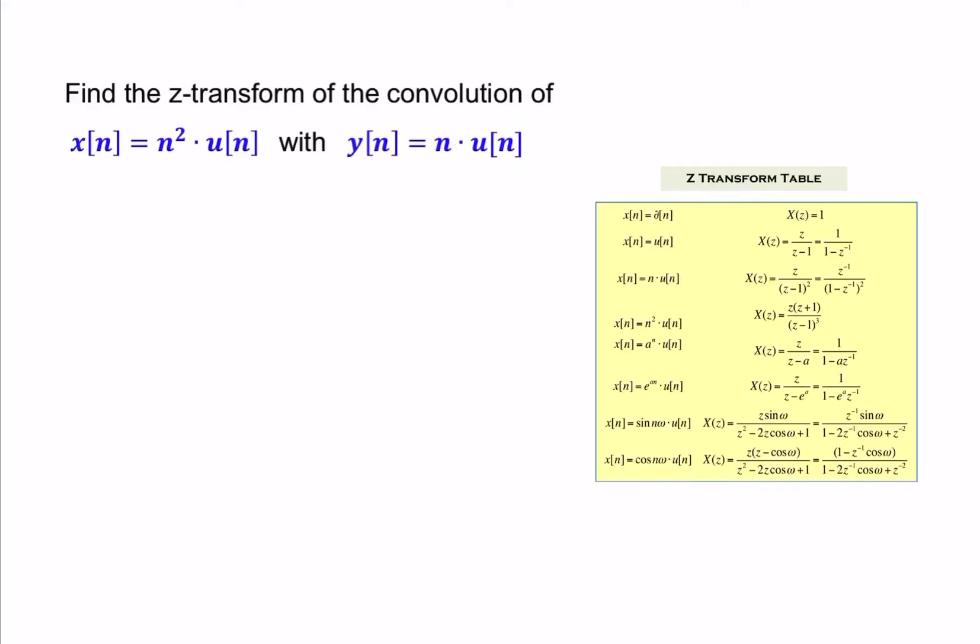In this question, we're asked for the Z-transform of the convolution of two signals. We have X and Y, time-domain signals, they're convolved in the time-domain